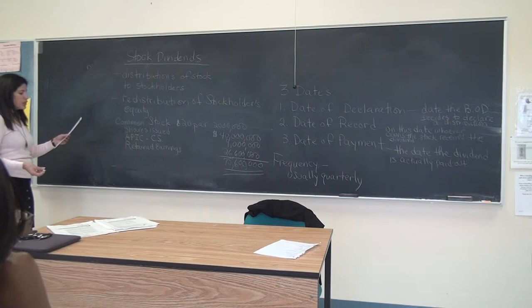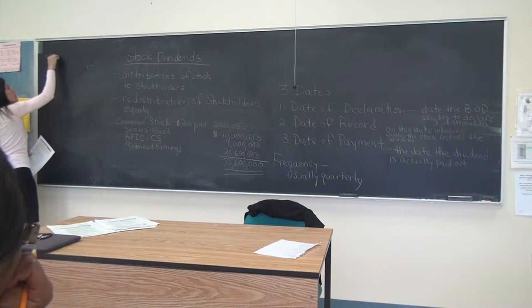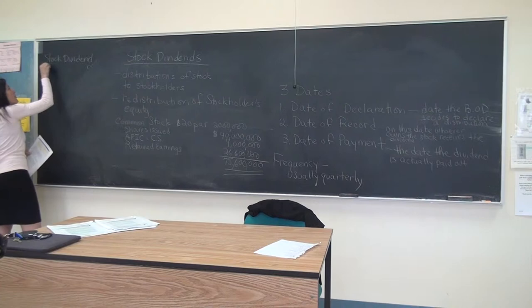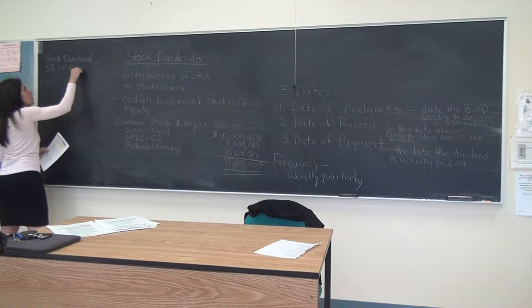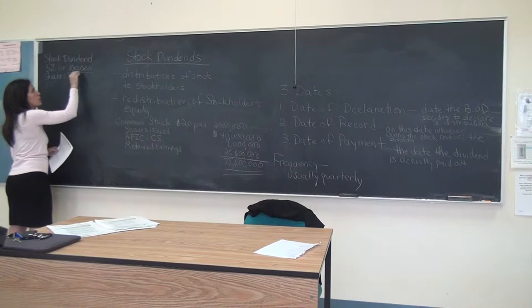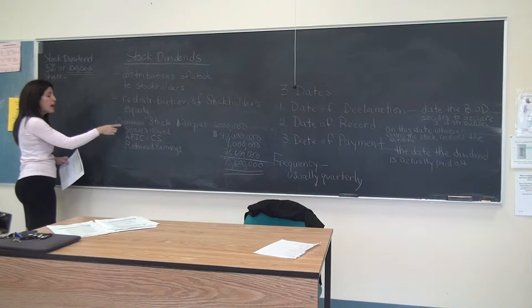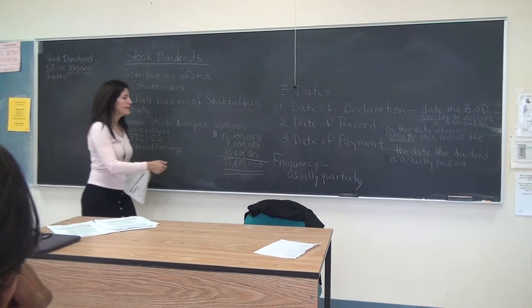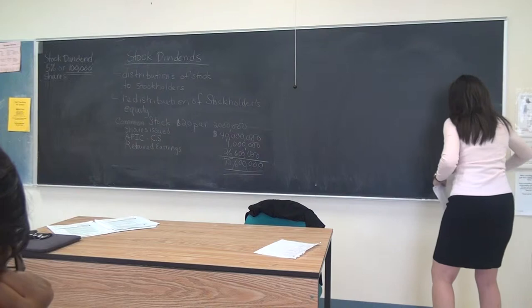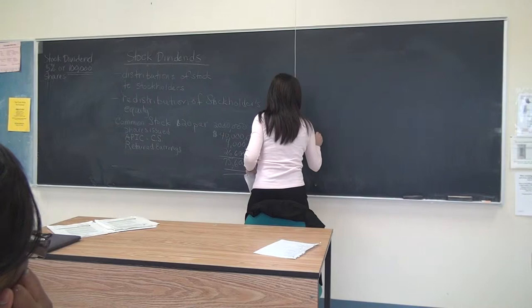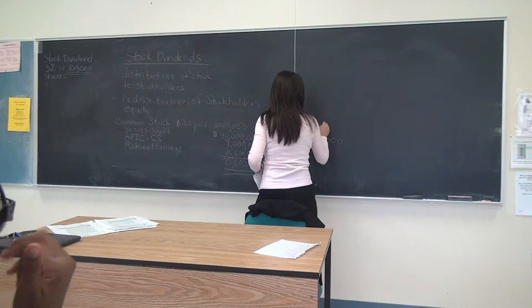On December 15th, Hendrix Corporation declares a stock dividend. Stock dividends are usually described in percentages — the stock dividend is 5% of the total outstanding shares. So 5% of 2 million shares is 100,000. So 100,000 shares were distributed to our stockholders — 100,000 new shares. So now instead of 2 million shares, we're going to have 2,100,000 shares. I'll do a before and an after so you can see it is just a redistribution of stockholders' equity.